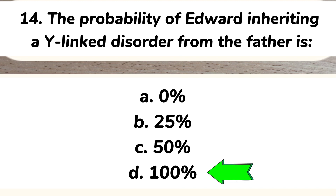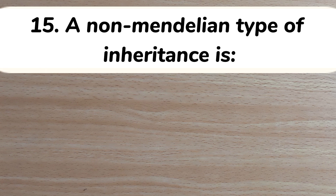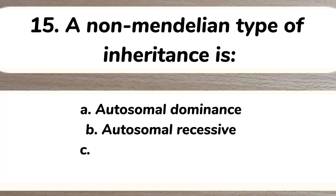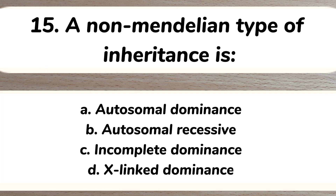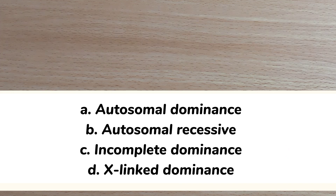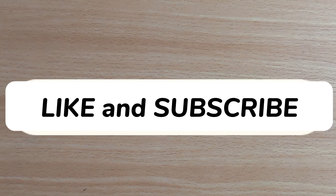Number fifteen: a non-Mendelian type of inheritance is A) autosomal dominance, B) autosomal recessive, C) incomplete dominance, D) X-linked dominance. Answer: C) incomplete dominance. Please like this video and subscribe to this channel if you want more of this kind of content.